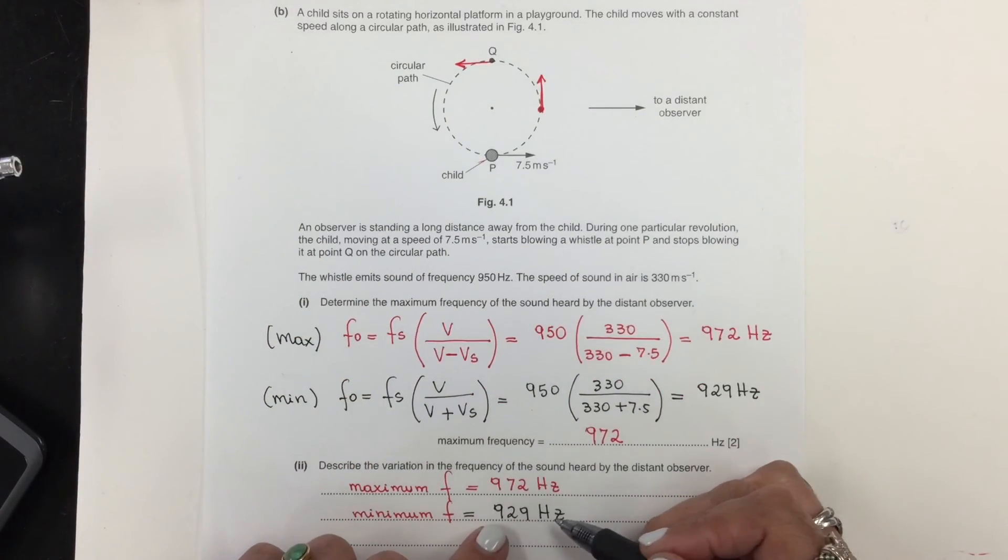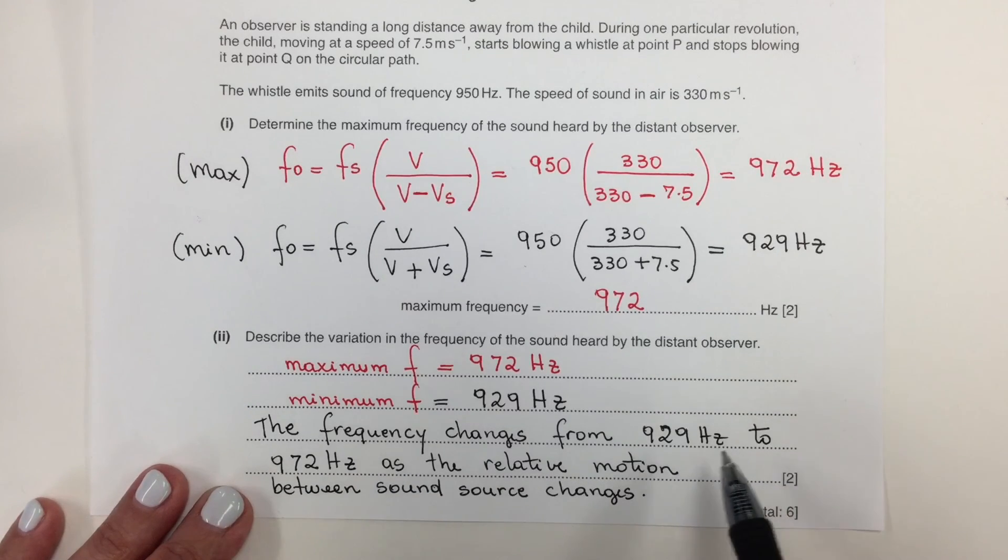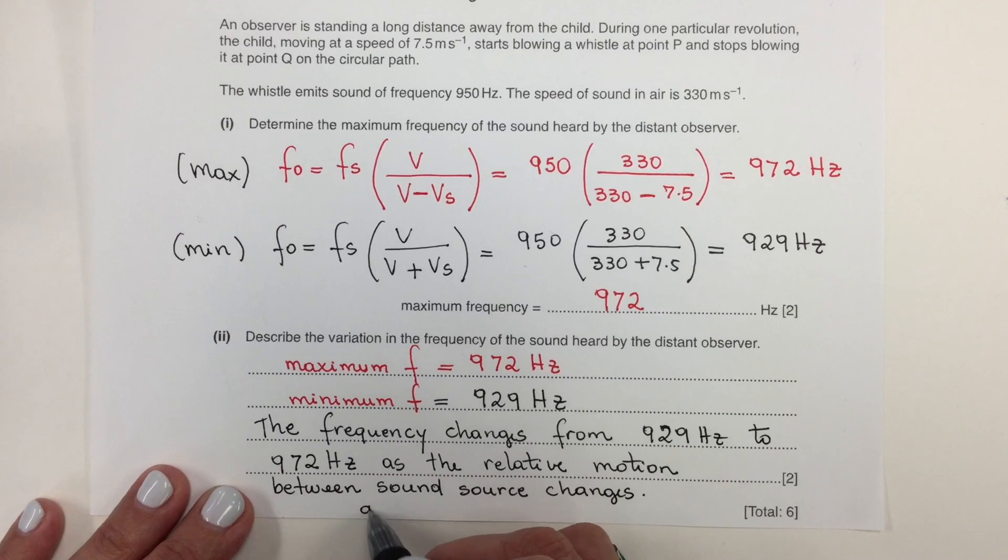The way that we can explain this is the frequency changes from 929, which is the minimum value, to 972, which is the maximum value, as the relative motion between the sound source and observer changes.